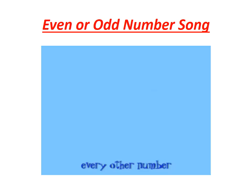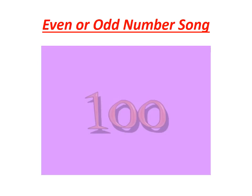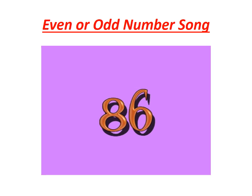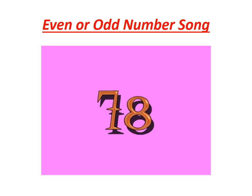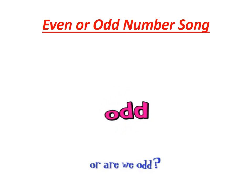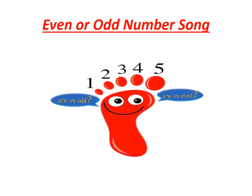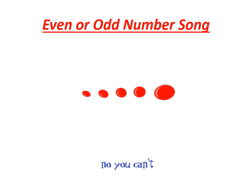Say this rhyme: every other number is always even — every other number on the number line. Are we even or are we odd? As five chubby toes — are we even or are we odd? Can you split them equally when they're all just five? No, you can't split five in half — you can try and try.